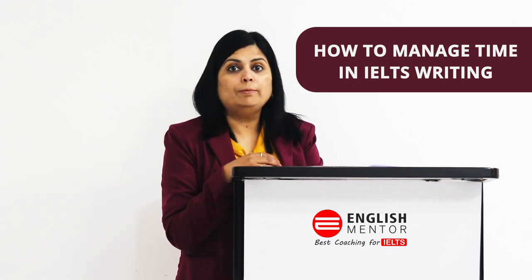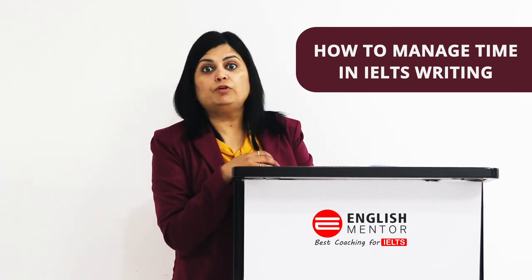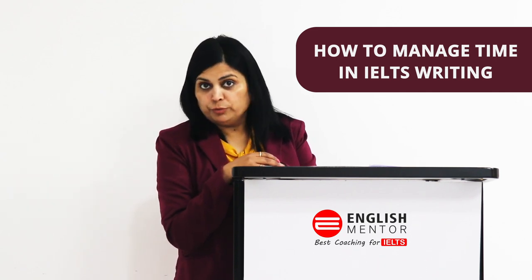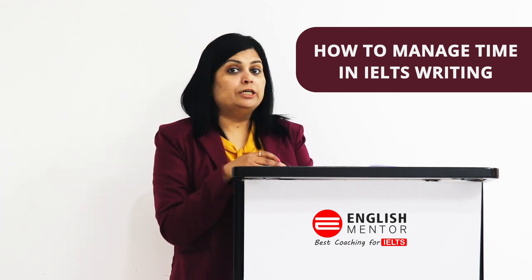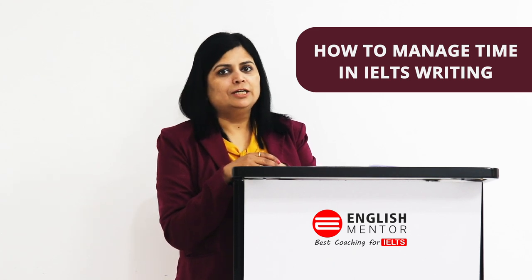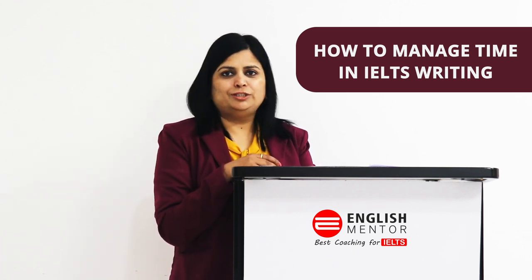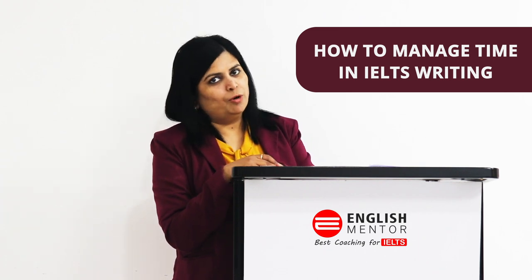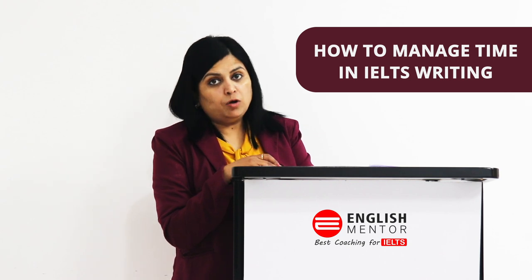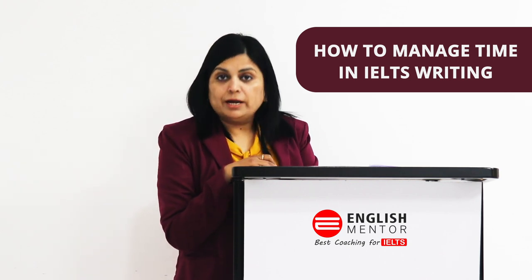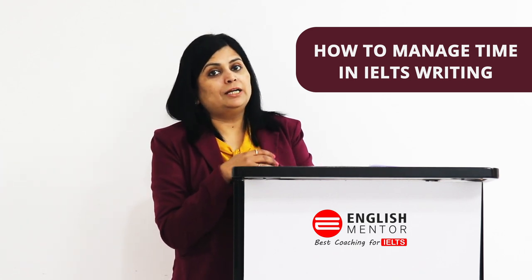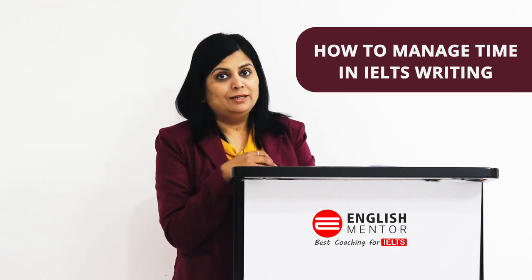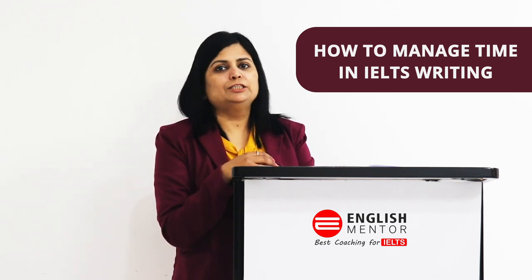We suggest starting with task 2 first and giving task 1 about 15 to 20 minutes. For task 2 you have to write at least 250 words with a proper introduction, conclusion, and your viewpoint. You cannot explain everything properly in 20 minutes, and when you do it in a hurry you will of course score less. To score more, it is better to manage your time in writing. I hope this helped you understand how to manage time. For more videos like this, please subscribe to our channel. Thank you.